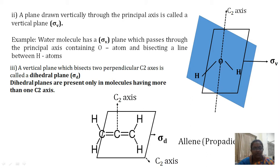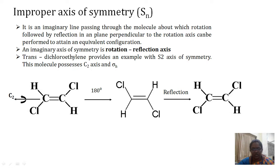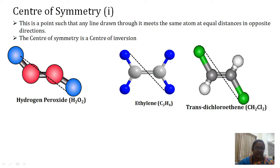The improper axis of symmetry is an imaginary line passing through the molecule about which rotation followed by reflection in a perpendicular plane can be performed to attain an equivalent configuration. It is also called the rotation-reflection axis. Trans-dichloroethylene provides an example with the S2 axis of symmetry — this molecule possesses a C2 axis and a σh. Rotating by 180 degrees and then reflecting gives the equivalent configuration.